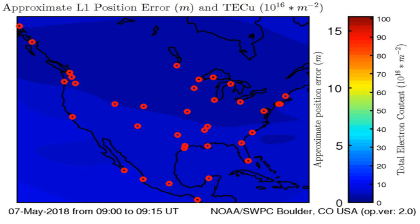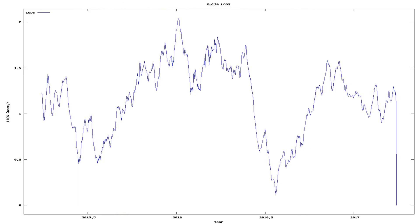And here we see the total electron content above the Earth. Anomalies in total electron content have sometimes preceded earthquakes below that area on Earth.